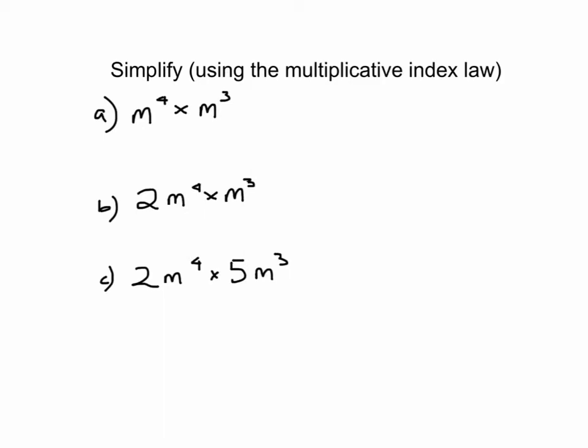The next one is using the first index law, which I'll call the multiplicative index law. So this time if we were to write these out in expanded form first, this would be m times itself 4 times times m times itself 3 times. And so if you were to count these up you'd get 1, 2, 3, 4, 5, 6, 7. So your final answer is m to the power of 7. But the more astute among you will notice that 4 plus 3 equals 7, which means you can go straight from this step to here if you remember to add the indices.